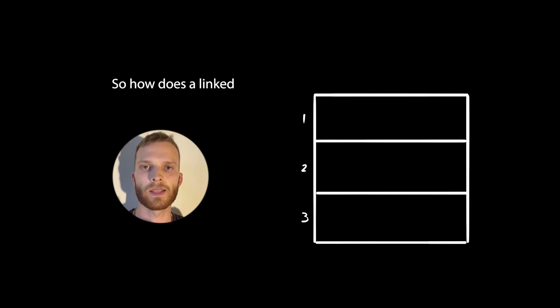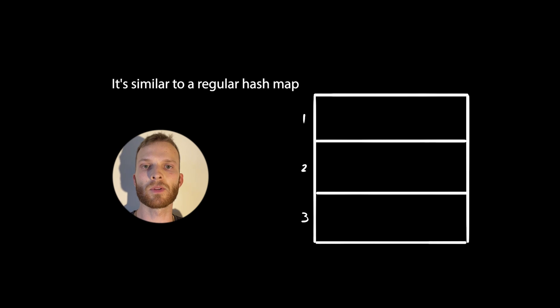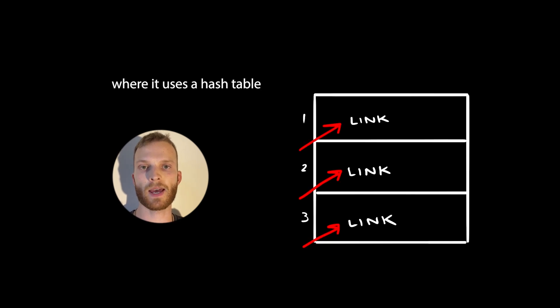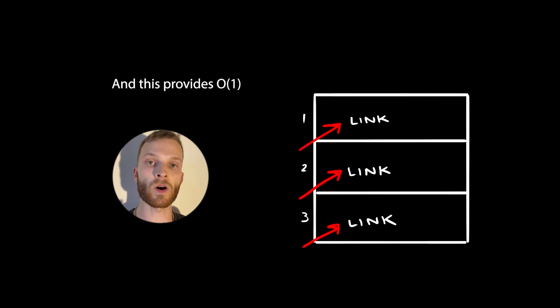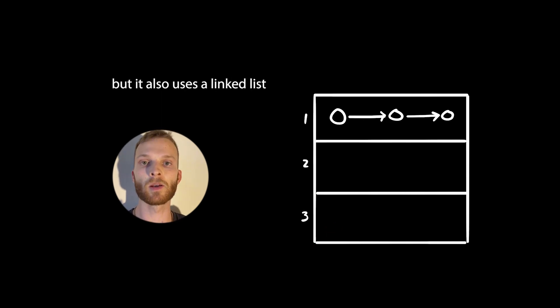So how does a linked hash map work? It's similar to a regular hash map where it uses a hash table for quick access to elements based on their keys, and this provides O(1), or constant time, lookup.